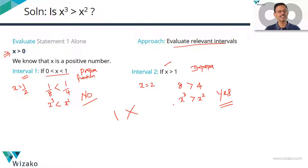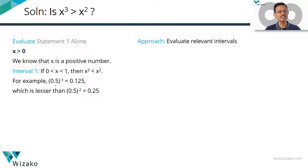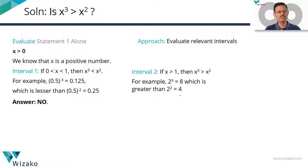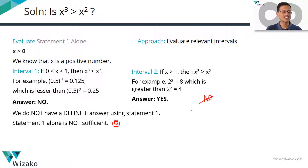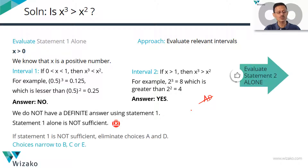To summarize Statement 1: for X = 0.5, X cubed is 0.125 and X squared is 0.25, so X cubed is less than X squared — answer is NO. For X = 2, X cubed is 8 and X squared is 4, so 8 is greater than 4 — answer is YES. Because we do not have a definite answer, Statement 1 alone is not sufficient. Since Statement 1 is not sufficient, we can rule out answer choices A and D from the ABCDE framework, narrowing our choices to B, C, or E.